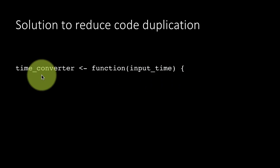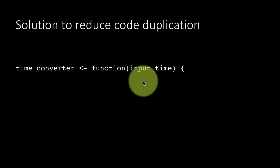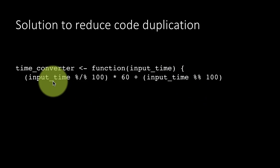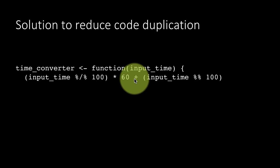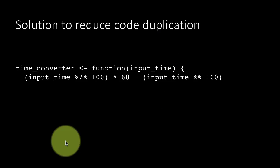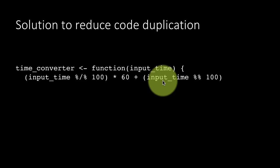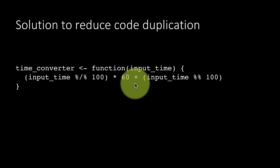So time_converter is the name of the function, and I'm saying here time_converter is a function. You define a function like this by saying function and then what are its inputs. This particular function takes only one argument, so we say input_time. And the function definition begins with an open brace, and we are saying input_time, whatever the input time is, integer division by 100 times 60 plus input_time remainder 100. So if the input time was 517, this will become 5 times 60, 300, plus the remainder 17, 317. And then we close the brace to indicate the function is done.